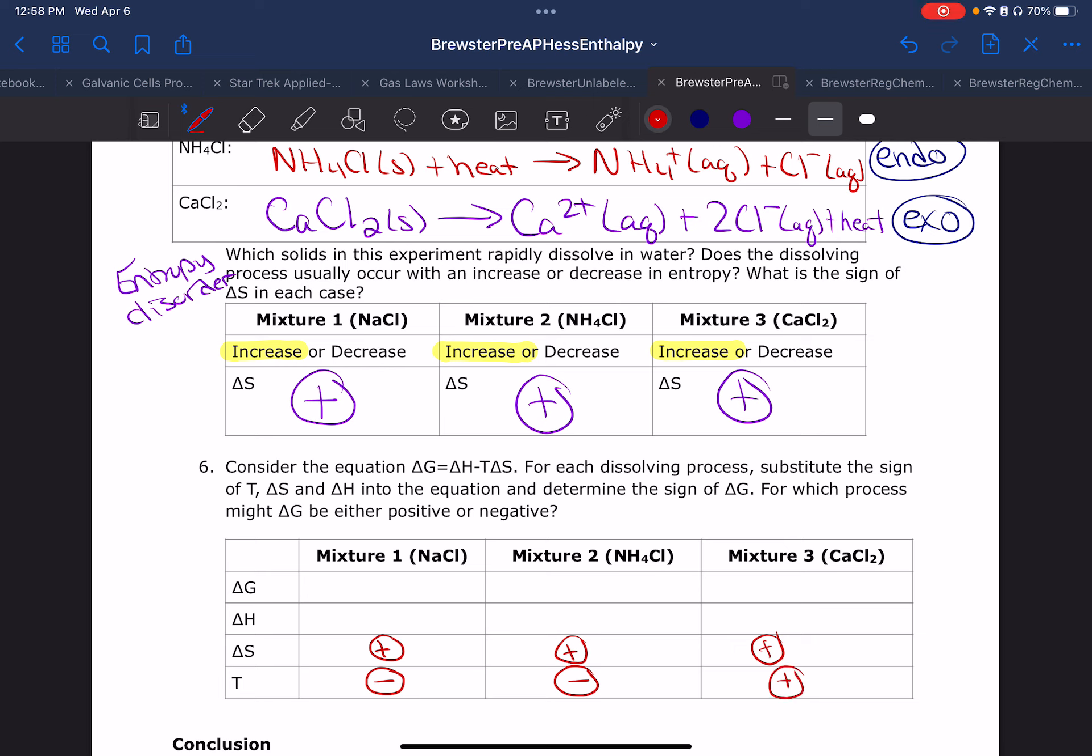The delta H. We talked about this. It's going to be the reverse of my Q. And so since my Q is negative, my delta H is going to be positive for the first two and negative for the last one. So this all comes from our results.